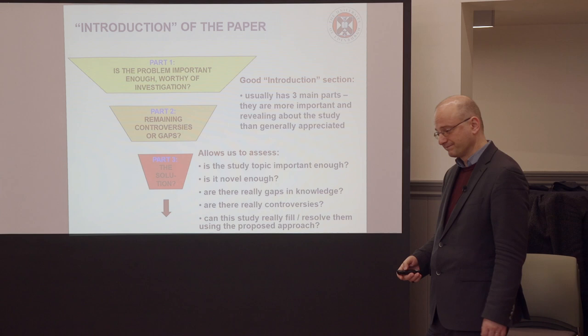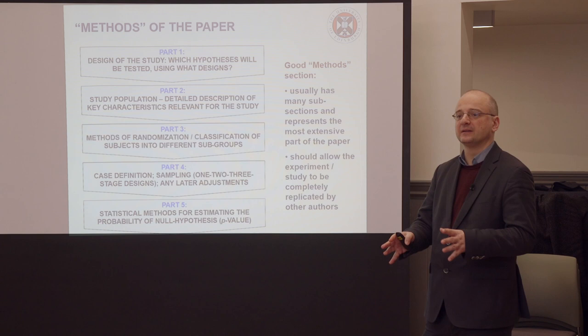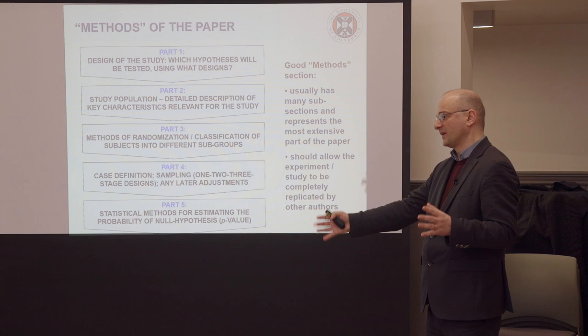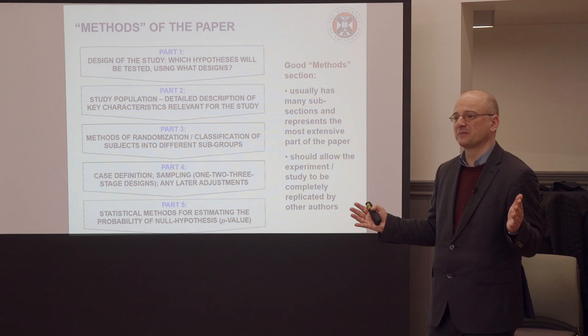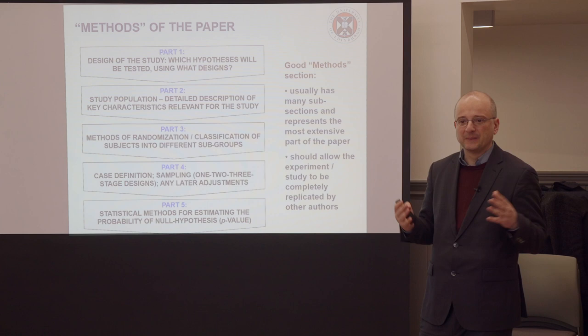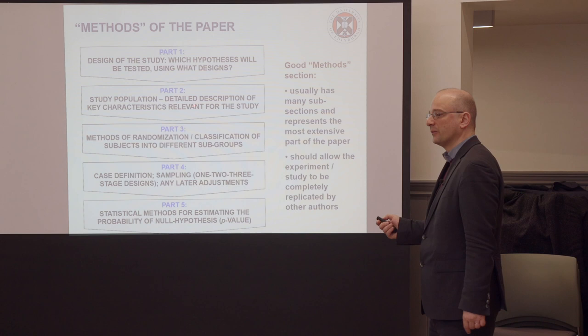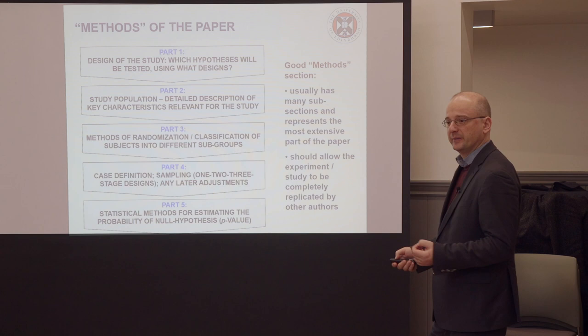Next, the methods of the paper. The more you move away from top universities into very low research capacity settings, the more you see how methods become tiny — half a page — whereas at top universities methods can be seven pages plus a lot of supplementary material. Methods need to be described in phenomenal detail because they must allow us to completely replicate what's been done somewhere else in exactly the same way. The good methods section usually has many subsections and represents the most extensive part of the paper.